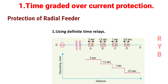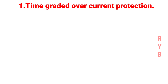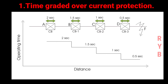In the definite time relay protection scheme, the total line is divided into different sections and each section is provided with a definite time relay. A definite time relay operates after a specific preset time period whenever a fault occurs in the feeder or transmission line — after that set time, it will trip the circuit breaker.